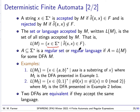A language is called regular — a regular set or regular language — if there exists some DFA whose language is that language. So a regular language is a set of strings accepted by some DFA. This notion of regular language is very important and we'll be coming back to it repeatedly.